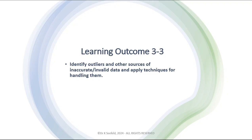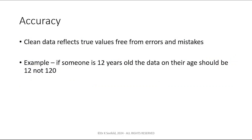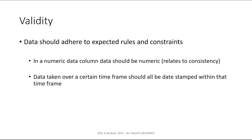Outliers are kind of a big deal. Everybody basically knows what an outlier is — it's a value that's outside of the range of the other values. This falls under the pillar of accuracy and validity, which go together. Accuracy reflects that the values are free from errors and mistakes. So if someone is 12 years old, their age should be represented as 12 and not 120. Validity refers to how the data adheres to expected rules and constraints. Accuracy and validity are very closely related — not exactly the same thing, but usually treated together.